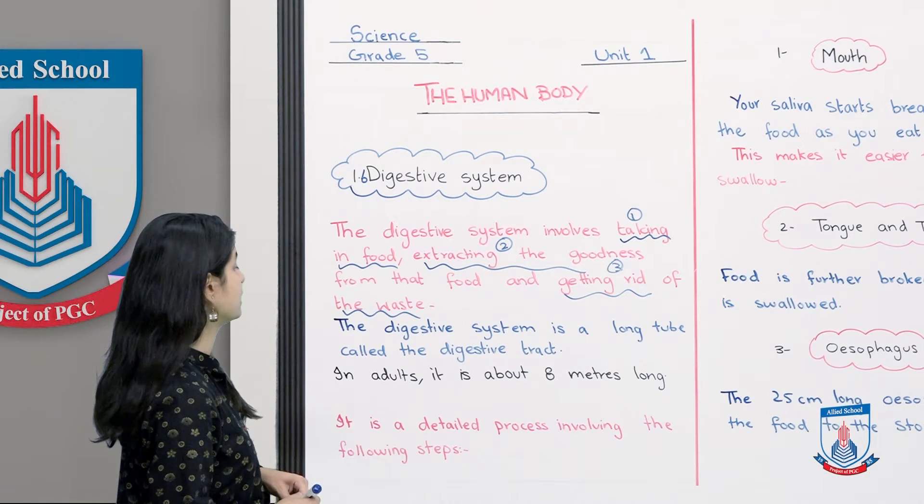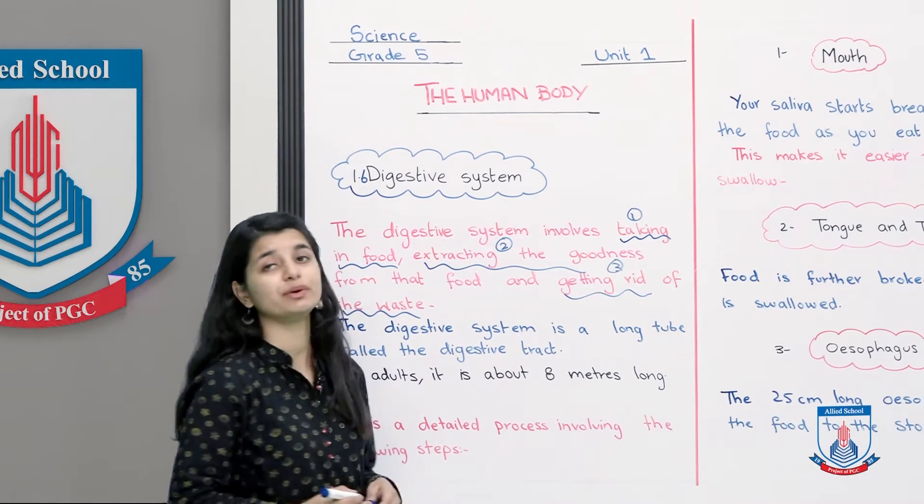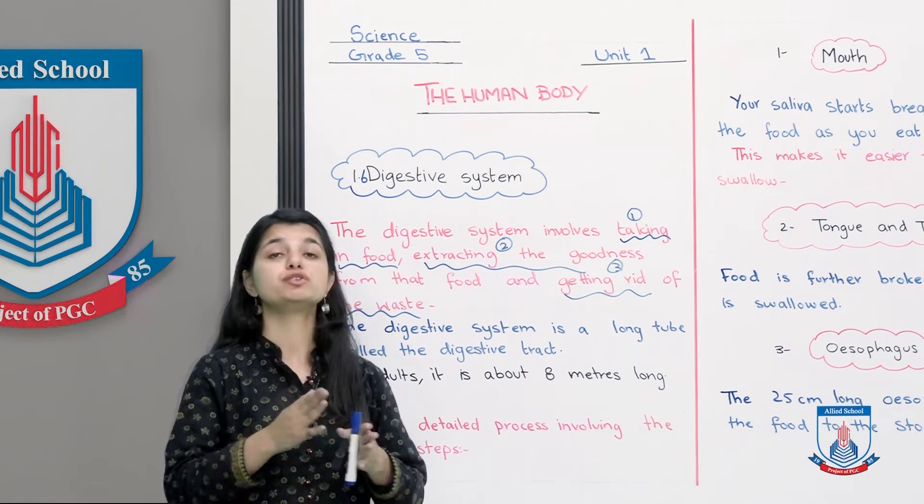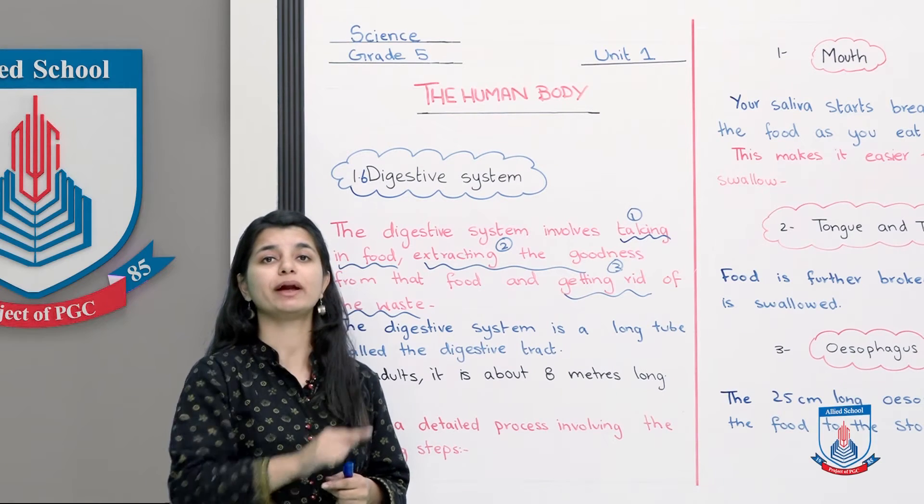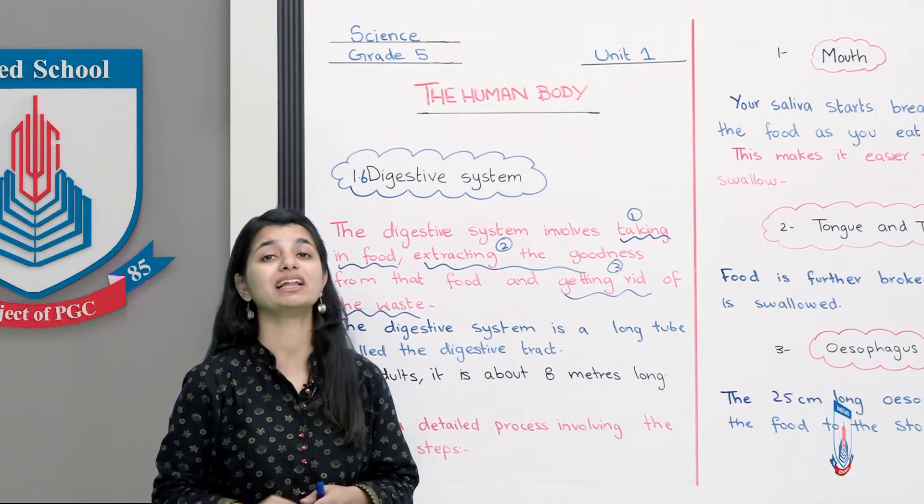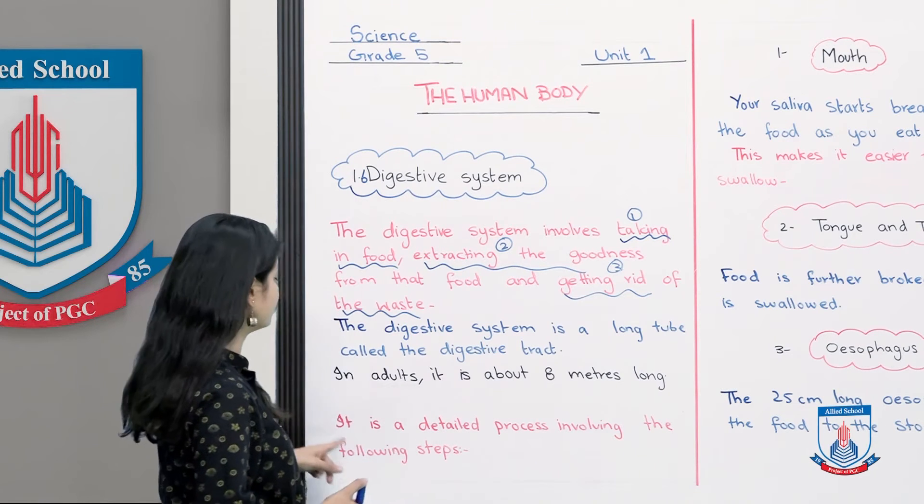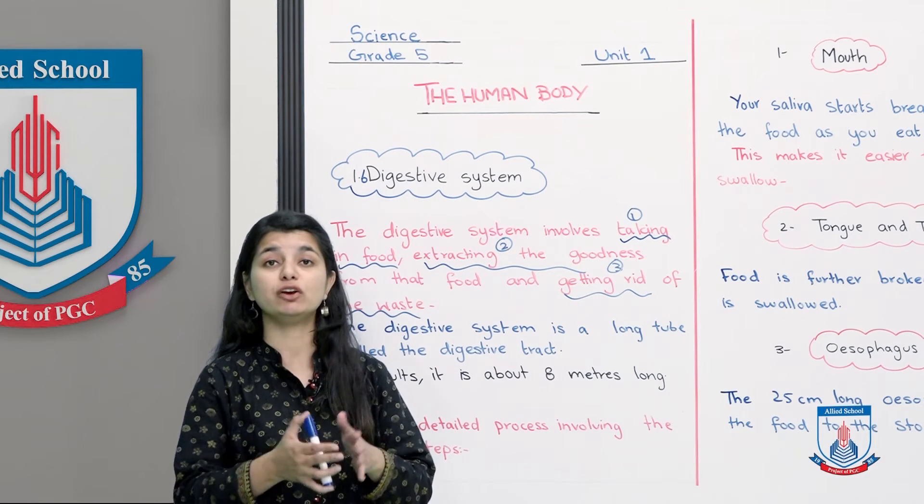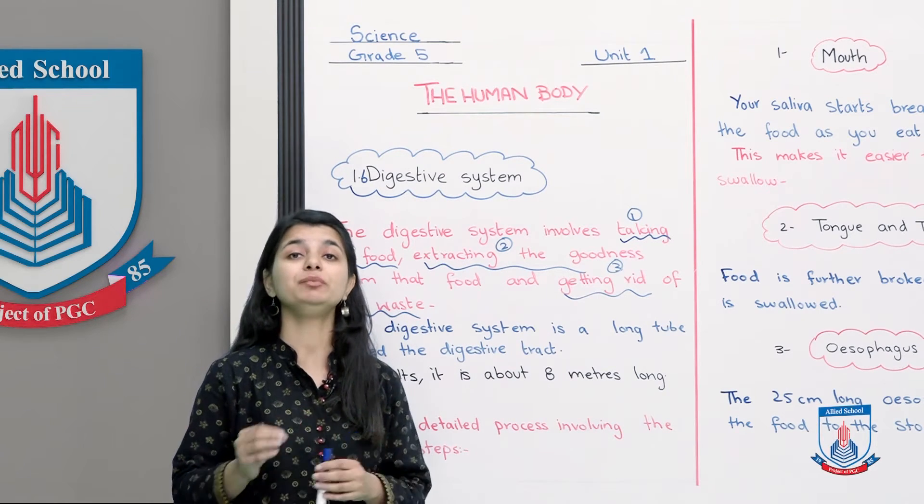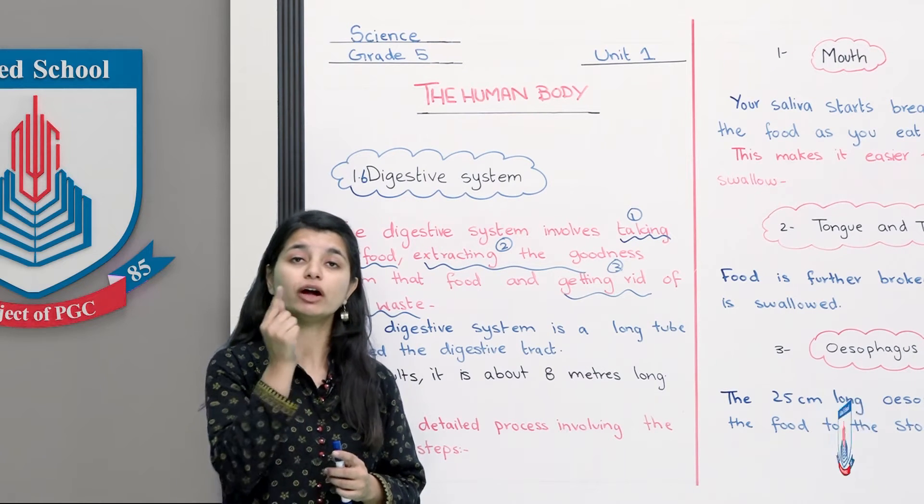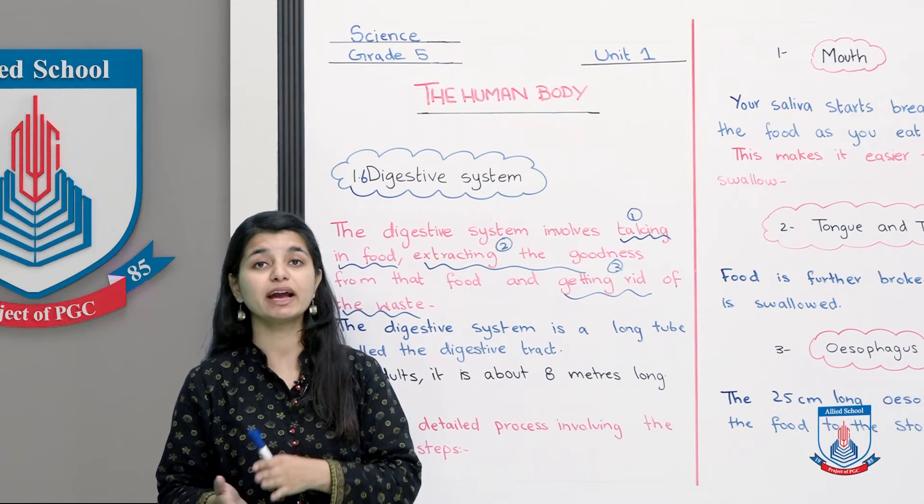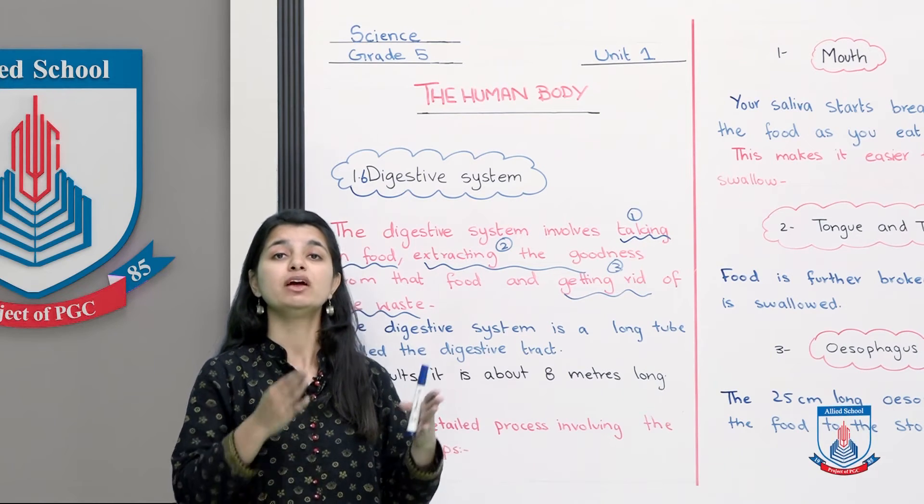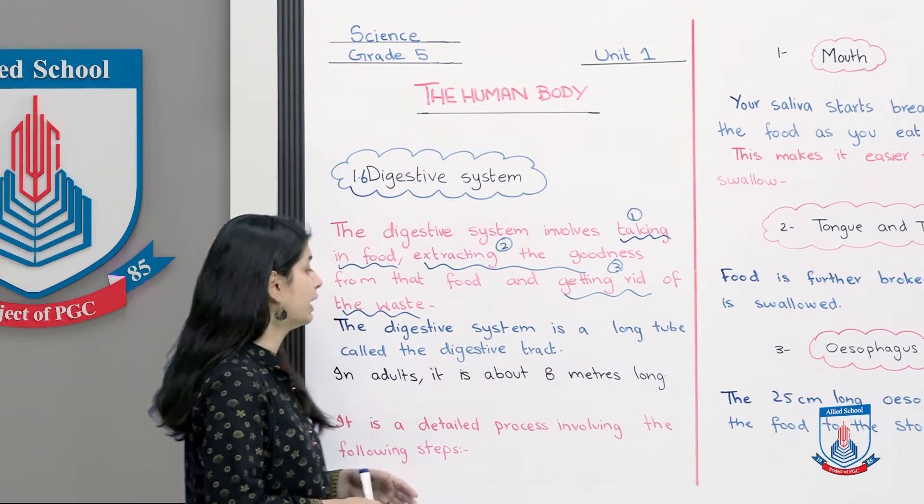The digestive system is a long tube called the digestive tract. What's happening in the digestive system is that a whole tube is divided into different parts. An interesting fact is that this tube is about 8 meters long. So 8 meters is a tube which is coiled in your body and the food goes through it. The nutrients are extracted, and at the end waste product comes out.